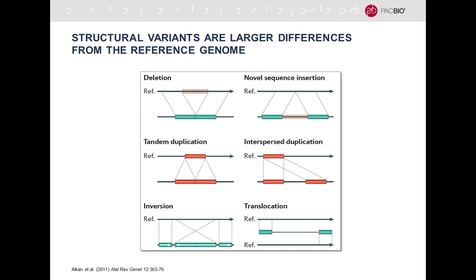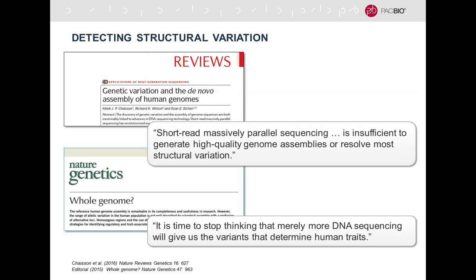Structural variants are larger differences from the reference genome. SNPs are one base pair changes; structural variants have been defined as differences of 50 base pairs and larger. There are many types: sequence deletions, novel sequence insertions, tandem duplications, interspersed duplications, inversions, translocations — all under the umbrella term structural variation. It has been recognized that short-read sequencers like Illumina are not well-suited to sequence and resolve this type of genetic variation.